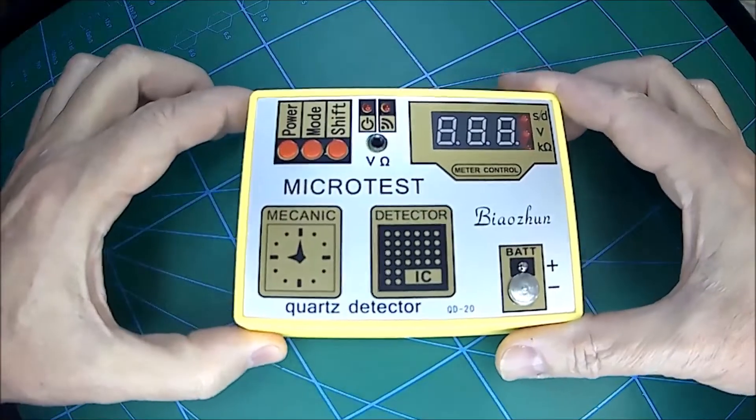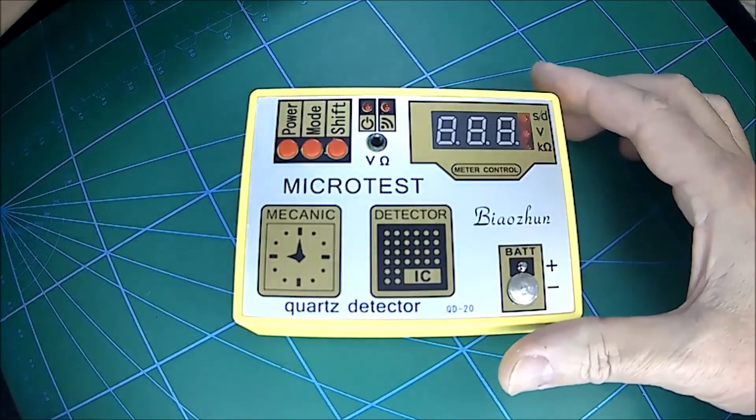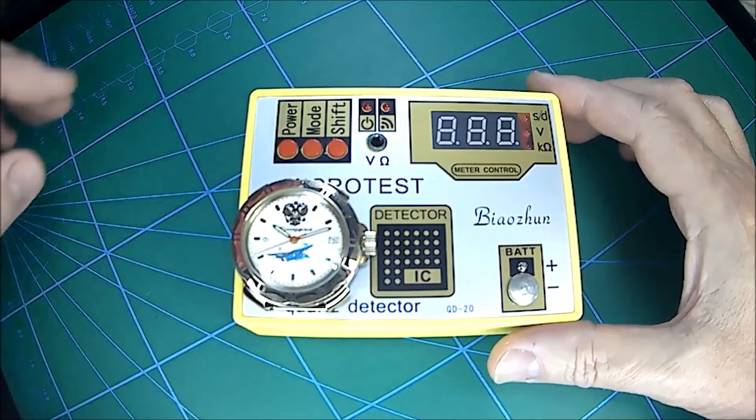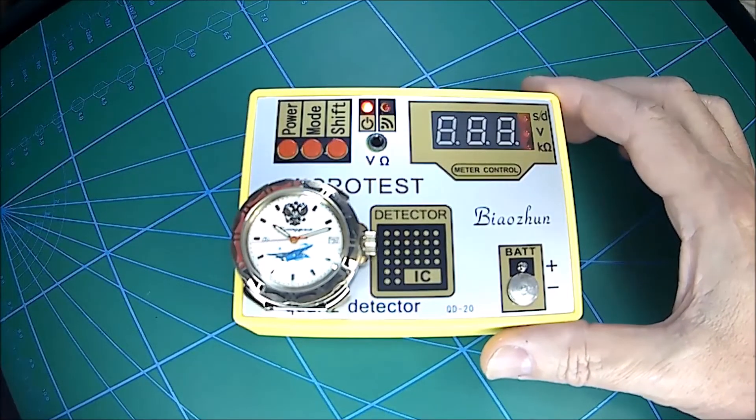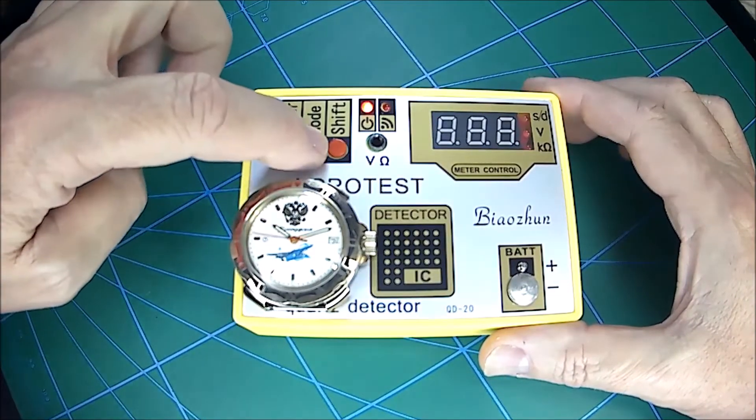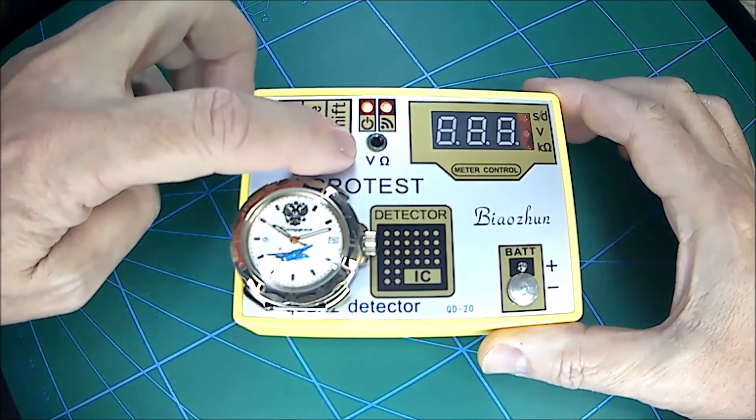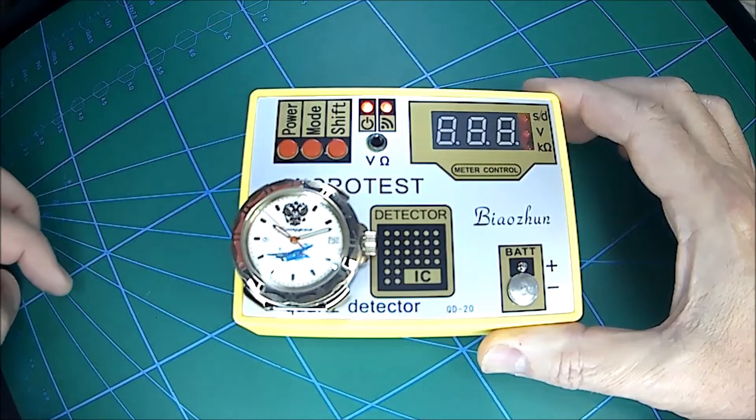So how to use the QD20? First of all, place the watch on the demagnetizing area, turn the QD20 on, select the next mode which is the demagnetizing, and then I prefer the higher speed setting.